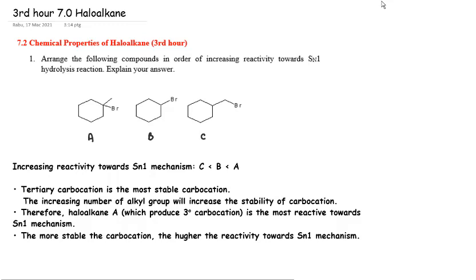Okay class, for the third hour of Chapter 7 we are looking at the chemical properties of haloalkanes. From our last video you learned about the introductions to SN1 and SN2 mechanisms. For SN1, it involves the formation of a carbocation, whereas for SN2 it involves the formation of a transition state. For this hour we want to discuss reactivity towards SN1 and SN2 mechanisms.